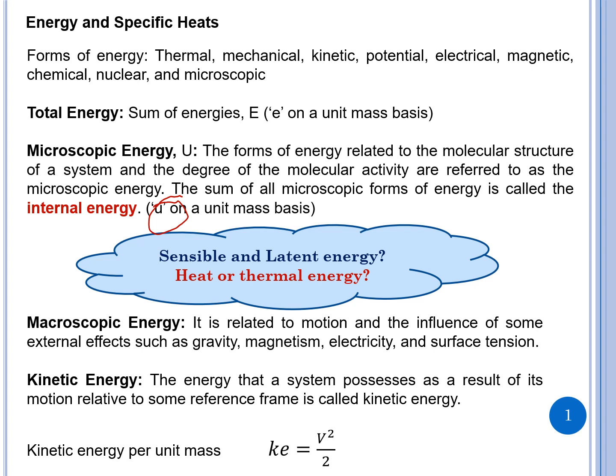To sum up, microscopic energies are the internal energies, while the other energies are called macroscopic energy. Macroscopic energy is related to the motion and the influence of some external effects such as gravity, magnetism, electricity, and surface tension. Well-known macroscopic energies include kinetic energy, potential energy, chemical energy, and nuclear energy.